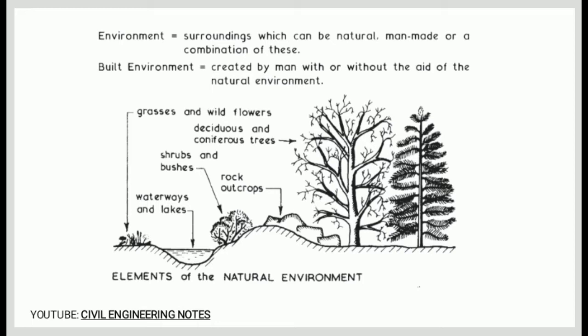The term natural environment refers to the non-human-made surroundings and conditions in which all living and non-living things exist on Earth. The common concept of the natural environment encompasses two different components: one is ecological units that operate as natural systems such as soil and vegetation, and two, universal natural resources such as air and water.